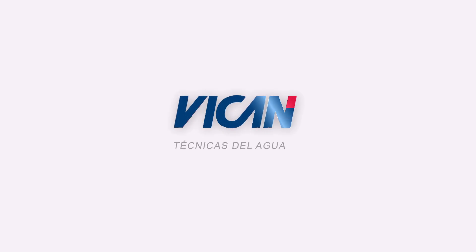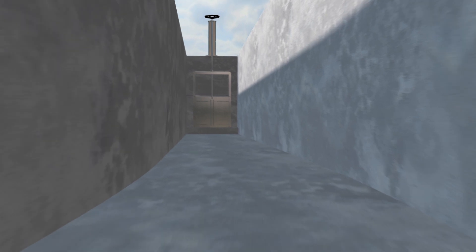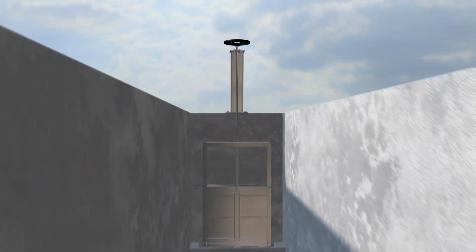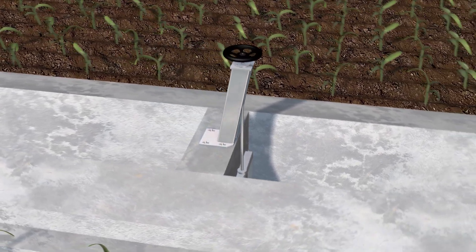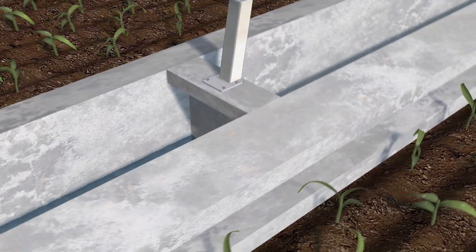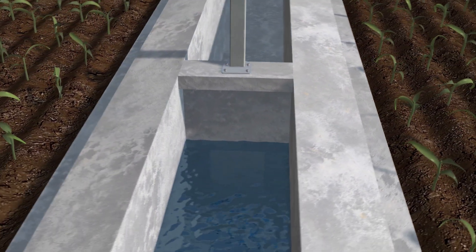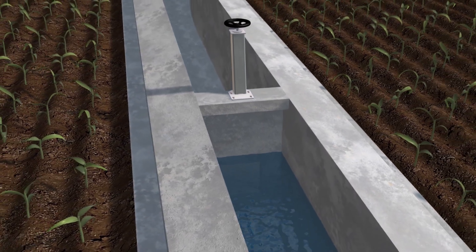Bican Technicas de la Goua is delighted to present their range of penstocks and sluice gates. Penstocks are elements used in the regulation and control of the flow of water through openings in the separation between two chambers in a channel or pipe through which water is conducted.